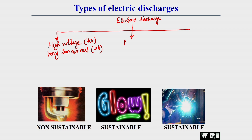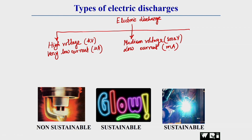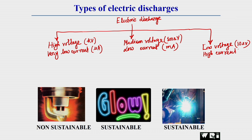The second category has a medium voltage in the range of 100 volts with low current in the range of milliamperes. The third category is low voltage — in the range of tens of volts — with high current in the range of amperes. These three categories produce three different types of electric discharge.